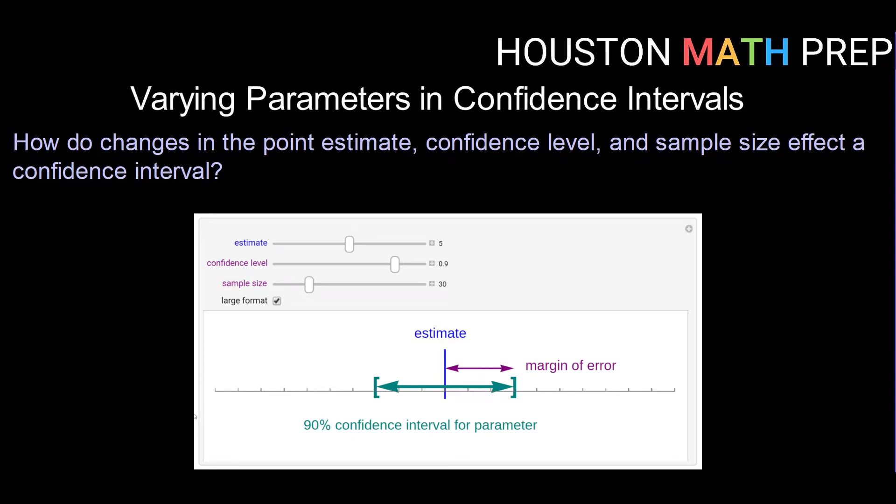Hey guys, welcome back. Houston Math Prep here. In this video we're going to look at what happens when we vary parameters in our confidence intervals. So we know that our confidence intervals are centered around our point estimate. They have a margin of error that goes from the left to the right of the point estimate or extends down to the left and extends up to the right.